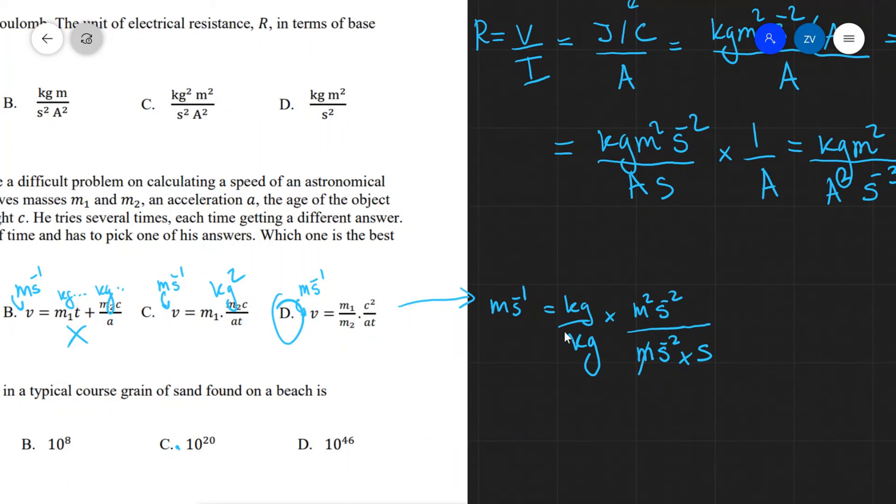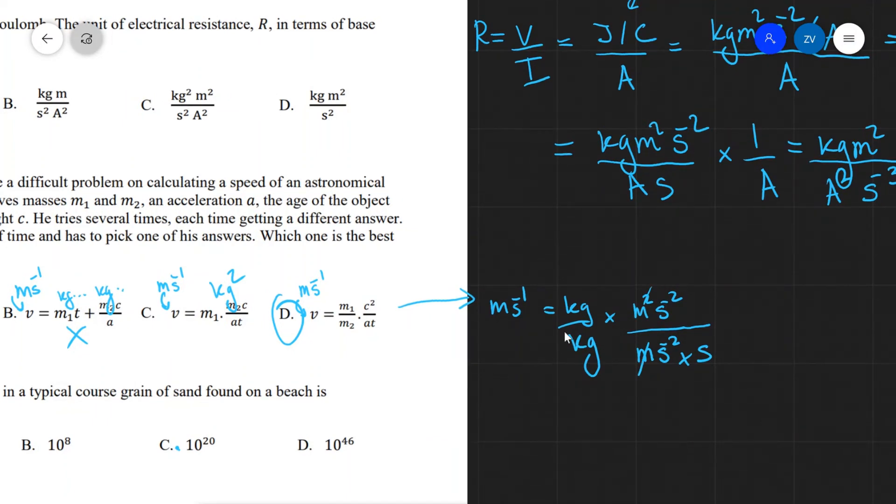So this will give us s to the power of minus 2 divided by s to the power of minus 3. So that's going to be in total m s to the power of minus 1. So for d, the units on the left are the same as the units on the right.